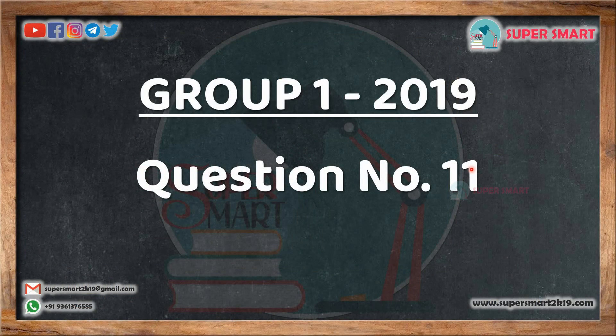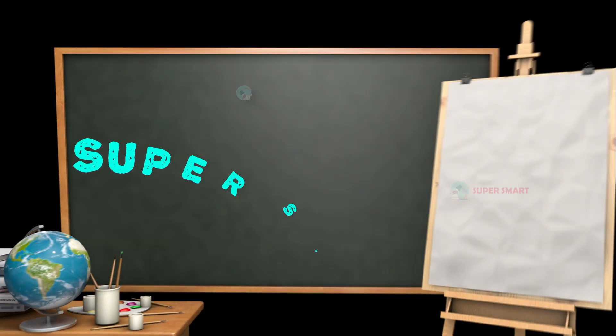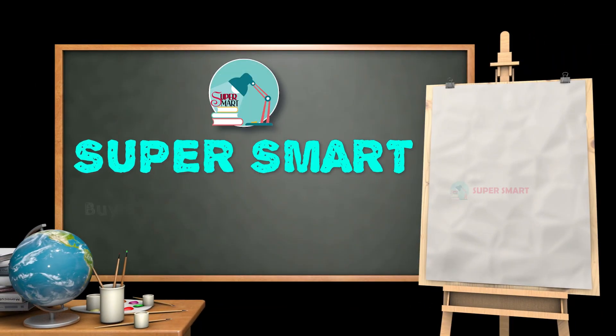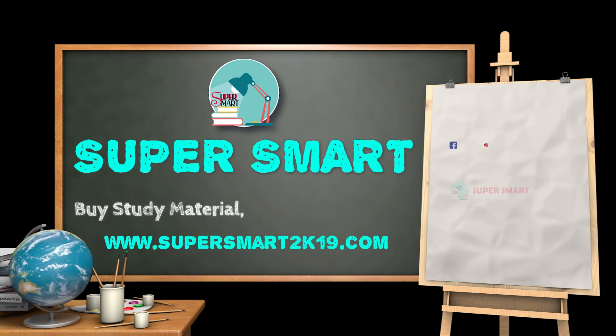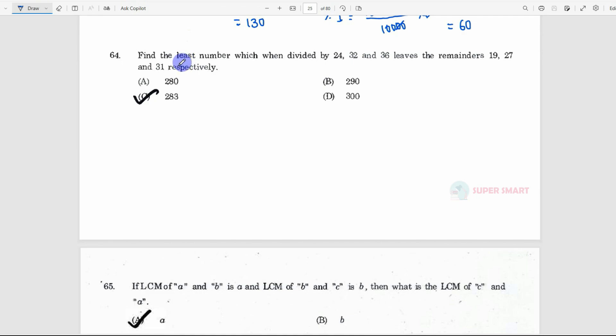Now question number 11, what is the solution? Let's go to the video. Question number 11: Find the least number which when divided by 24, 32, 36 leaves the remainder of 19, 27, and 31 respectively.